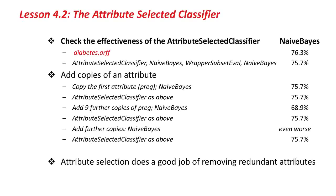Back on the slide: if I just run NaiveBayes on the diabetes dataset I get 76.3%, and using the attribute selected classifier properly — not cheating — I get 75.7%. It's a little disappointing that attribute selection didn't help much on this dataset. But if I copy the first attribute once, NaiveBayes gives 75.7% and the attribute selected classifier also gives 75.7%. If I add nine further copies, the performance of NaiveBayes deteriorates to 68.9%, whereas the attribute selected classifier stays the same because it's resistant to redundant attributes. If I add further copies, NaiveBayes slowly gets worse and worse, whereas the attribute selected classifier continues at 75.7%. The conclusion is that attribute selection does a good job of removing redundant attributes.